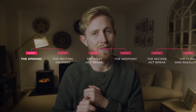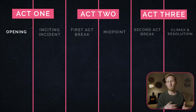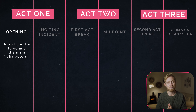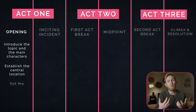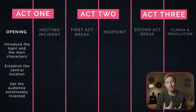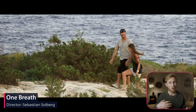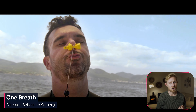First up is the start of act one — we have the opening. This is where you introduce the topic and the main characters of your film, establish the central location or setting of the story, and get the audience emotionally invested in the documentary. It's really important to get the audience emotionally invested in your topic and key characters within the opening so that they'll want to keep watching to find out what's going to happen next.